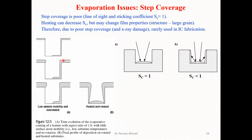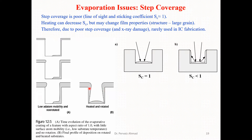In case A, deposition occurs only in one particular area because there is no rotation. In case B — the rotated and heated substrate — we not only heat the substrate but also rotate the structure, so deposition occurs almost at all parts of the substrate.